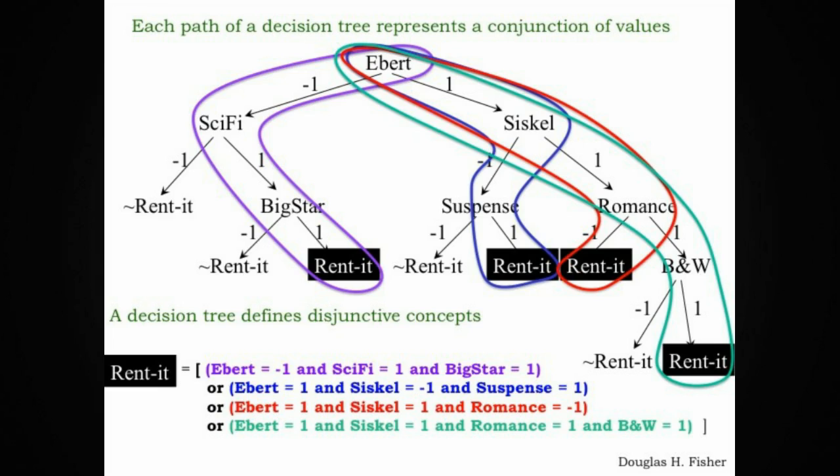All four of those paths, when you disjoin them, you get a disjunctive normal form concept, which represents the situation in which the model would assert that a user would rent a movie.